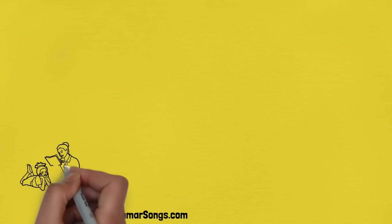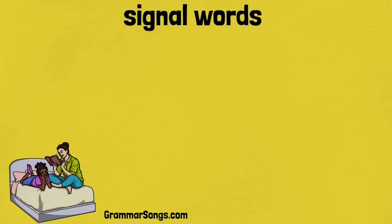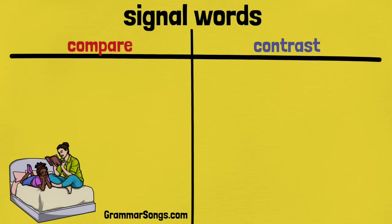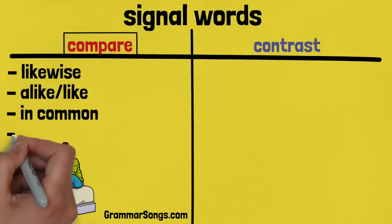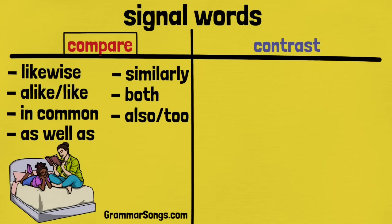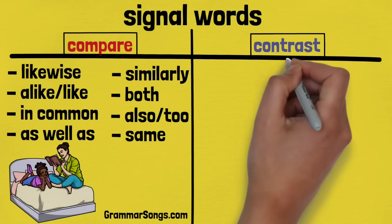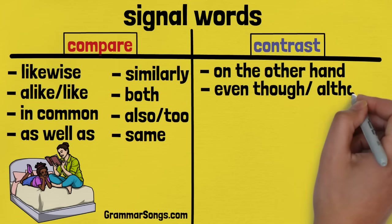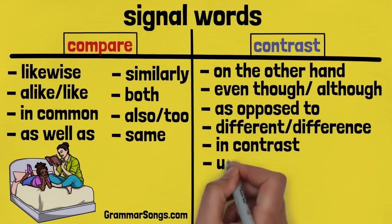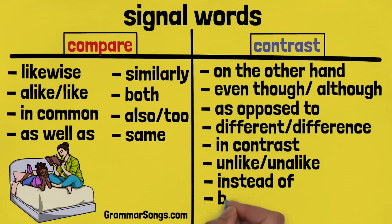When you are listening or reading, there are a number of signal words an author may use to indicate the relationship between two ideas — in this case, to either compare or contrast. Some common signal words to compare are: likewise, alike or like, in common, as well as, similarly, both, also or too, and same. Some common signal words to contrast are: on the other hand, even though or although, as opposed to, different or difference, in contrast, unlike or unalike, instead of, but, and however.